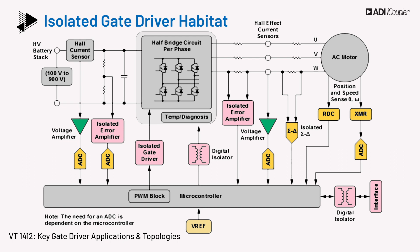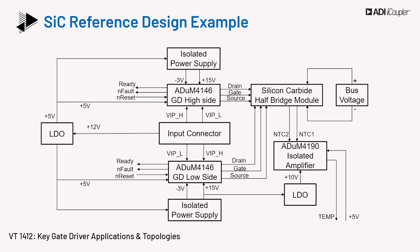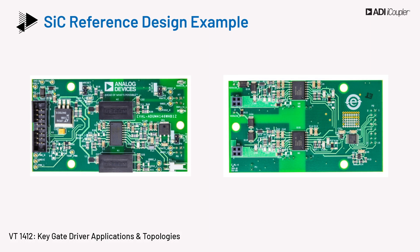Other applications such as EVs and HEVs also have a separate inverter for regenerative braking. Inverter system power levels may range from a few kilowatts to hundreds of kilowatts. The figure shows a block diagram design for driving a silicon carbide SiC half-bridge module, consisting of two ADUM4146 isolated gate drivers to drive each of the switches in the module. The ADUM4146 is a protecting gate driver with bipolar supply, Miller clamp, and desaturation protection. The secondary side is powered with an isolated supply with +15V and -3V rails. The board also has a circuit for temperature measurement of the module, along with additional linear regulators and other supplementary components.